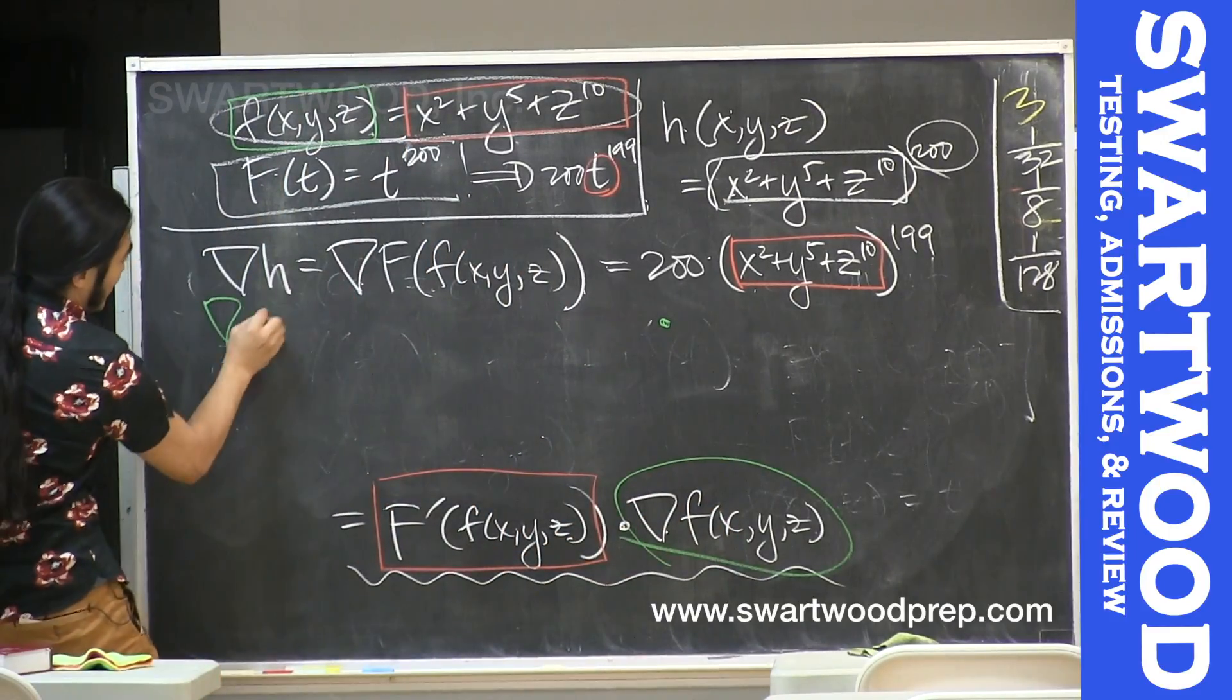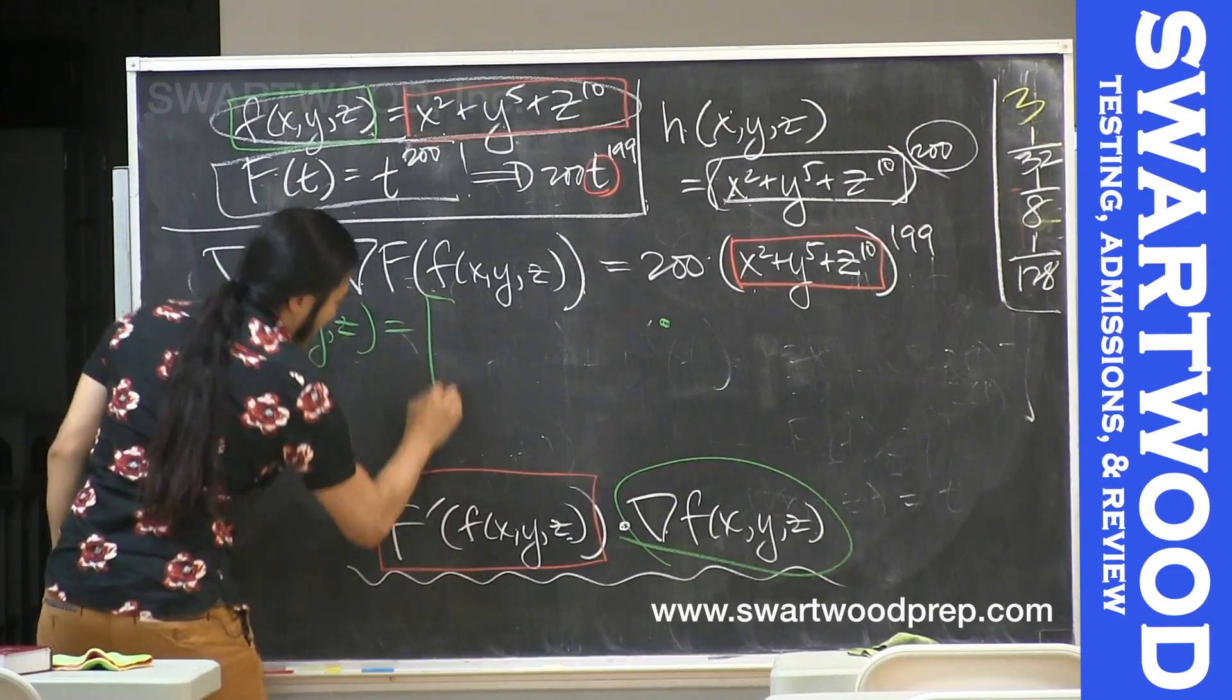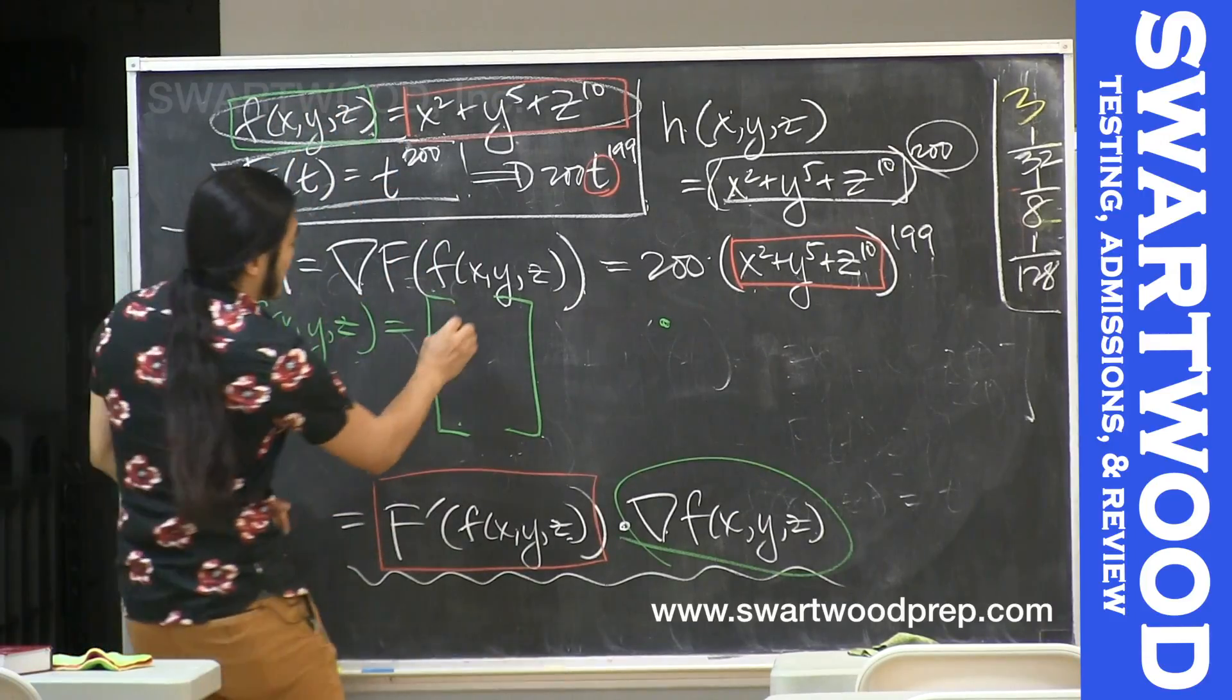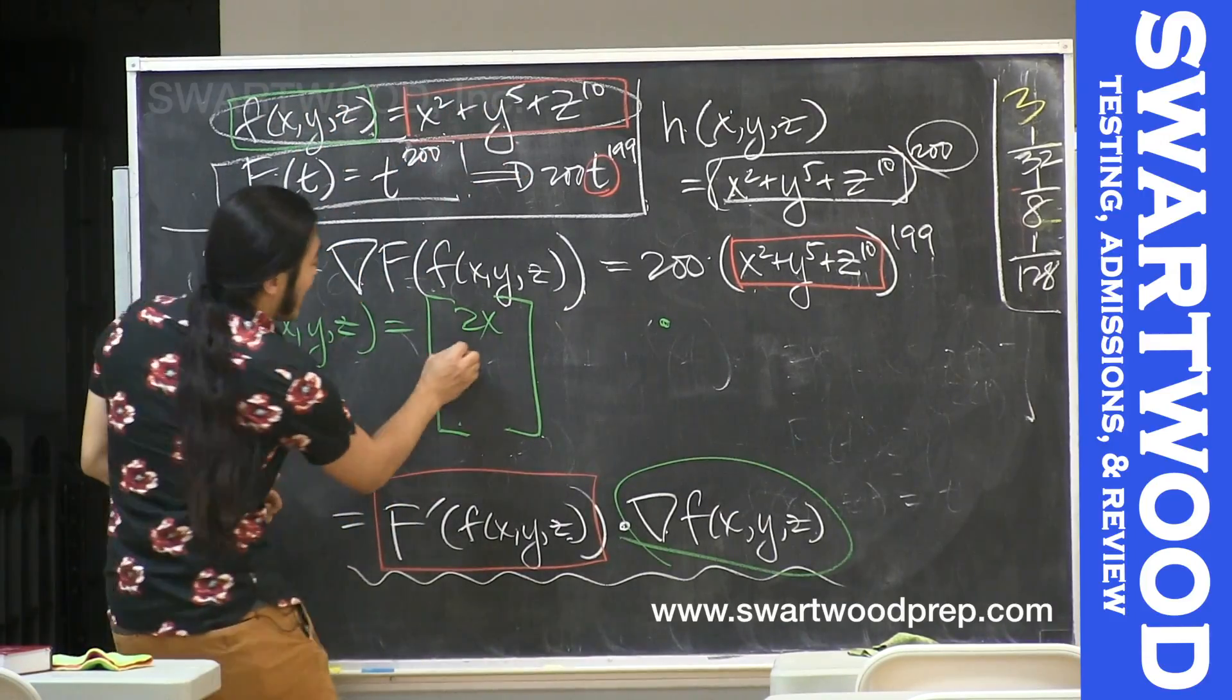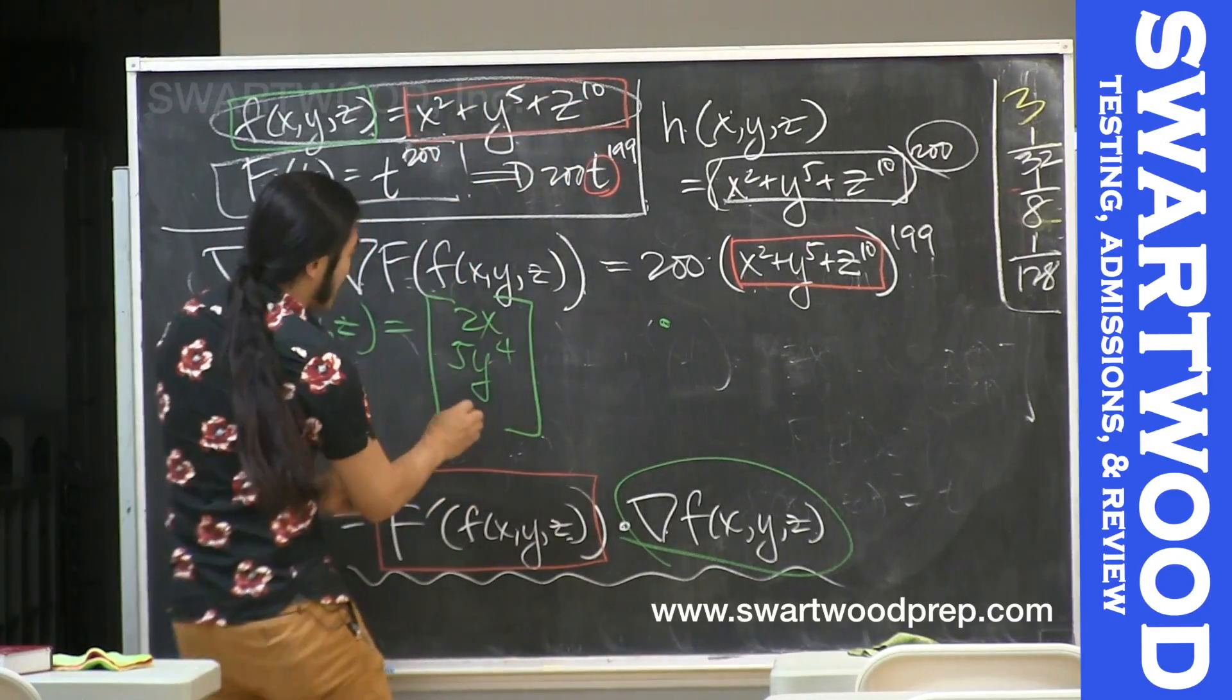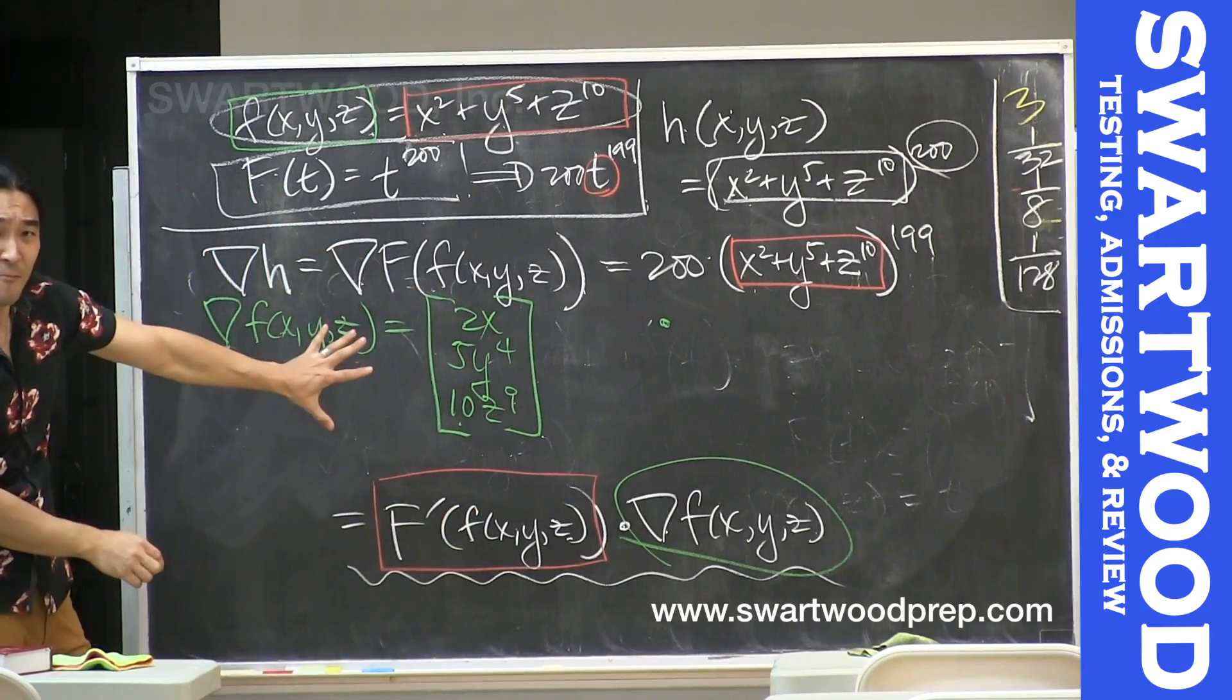So if we do a separate computation here, the gradient of this guy is going to be, I'm going to do it in vertical column format. So the partial of this guy with respect to x, that would be 2x. The partial with respect to y, that would be 5y to the 4th. The partial with respect to z, that would be 10z to the 9th. Do you guys buy that?